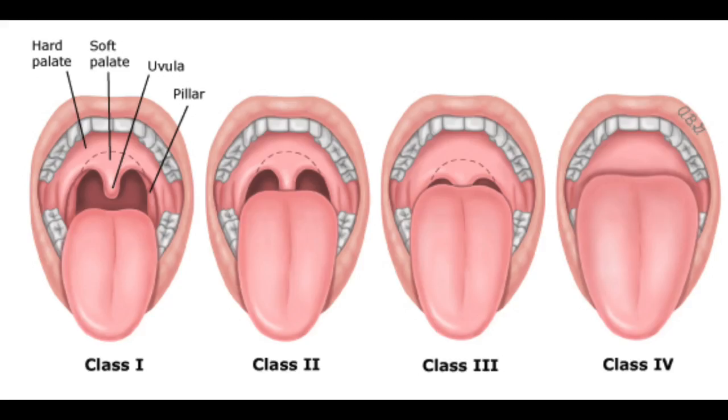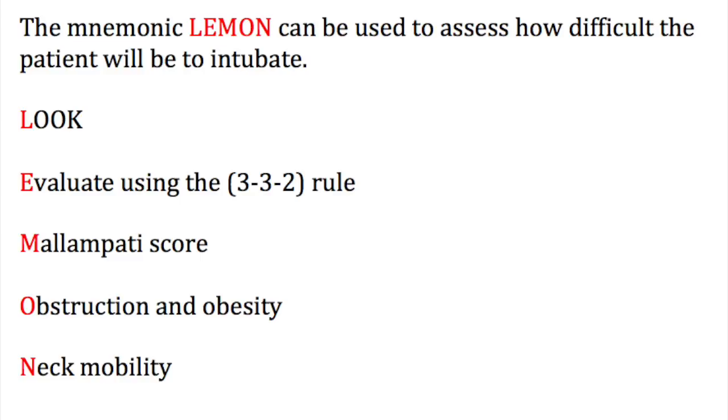M stands for Mallampati score. Have the patient open their mouth — class one is best, four is worst. Class one: you can see the uvula clearly; class two: only half the uvula; class three: a small portion; class four: only the hard palate. One and two will be easy, three will be difficult, four extremely difficult. O stands for obstruction and obesity — hoarse voice, stridor, or large tonsillar abscess. N stands for neck mobility — decreased mobility from cervical degenerative disc disease leads to a more difficult intubation.